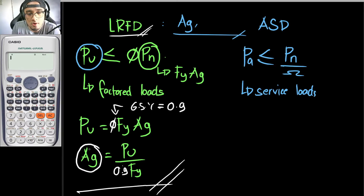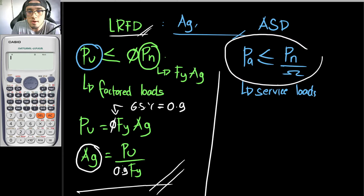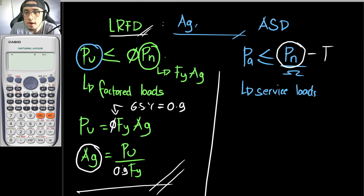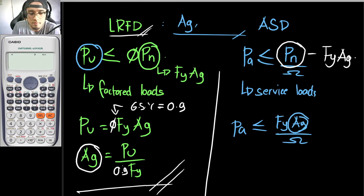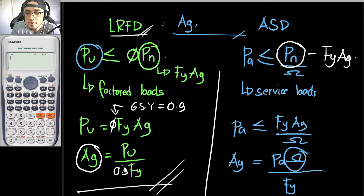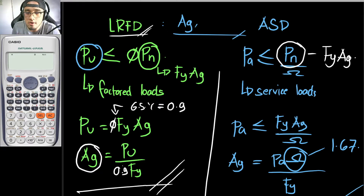For ASD in gross sectional yielding, Pn equals Fy times Ag. So Pa should be less than or equal to Fy times Ag divided by omega. Solving for Ag: Ag equals Pa times omega divided by Fy, where omega for gross sectional yielding equals 1.67.